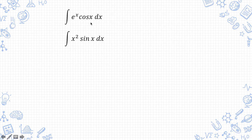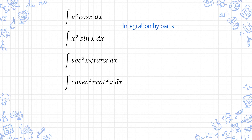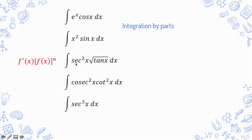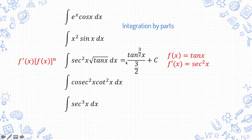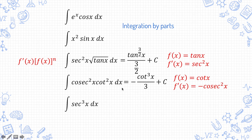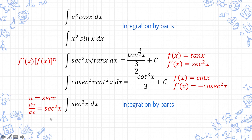If you have trigonometric functions multiplied by other types of functions, it's most likely going to be integration by parts — those examples are covered in my previous video. You also need to be very familiar with what integrates or differentiates to what: differentiating tangent gives secant squared; differentiating cotangent gives negative cosecant squared, and so forth. So if you see them together, you can usually apply the f'(x) times f(x) to the power of n method. For example, with f(x) equals tangent x and f'(x) equals secant squared x, the result is f(x) to the power of n plus 1 over n plus 1. Similarly, with f(x) equals cotangent x and f'(x) equals negative cosecant squared x, the result is the same form. For higher powers, you can do integration by parts with u equals secant x and dv/dx equals secant squared x.